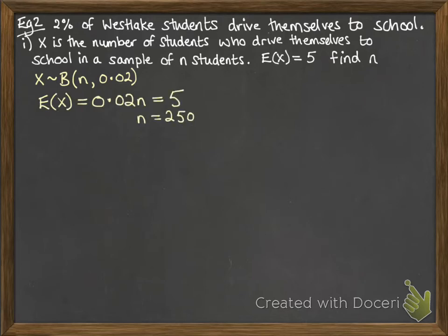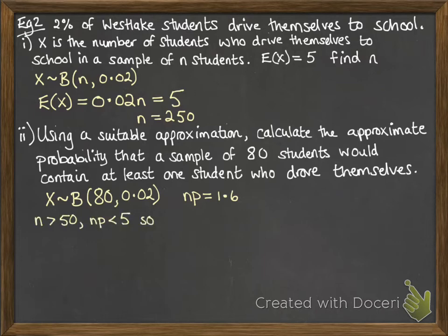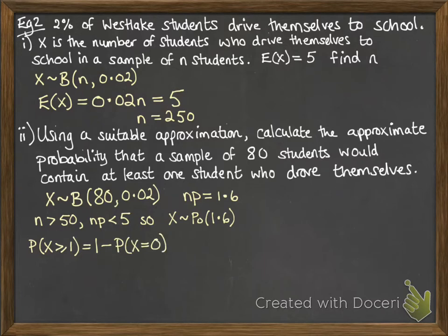So n must be 250. Then, using a suitable approximation, we calculate the approximate probability that a sample of 80 students would contain at least one student who drove themselves. X follows a binomial distribution with a sample size of 80 and probability of success 0.02. Now np equals 1.6; the sample size is bigger than 50 and np is less than 5, so we can use a Poisson distribution. We work out the probability that x is greater than or equal to 1, which is the same as 1 minus the probability that x equals 0.